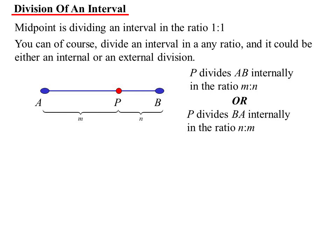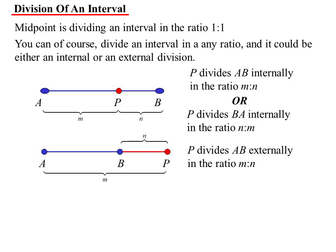So that's internal. Well, what's an external division then? Well, it's if you produce the line out. So I'll produce it this way. So I've gone from A to B, produced it out to P. P still divides this ratio, but it's externally in the ratio M to N. But it still means that from P to A is M parts, and from P to B is N parts. That doesn't change.